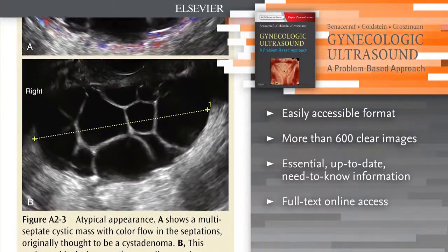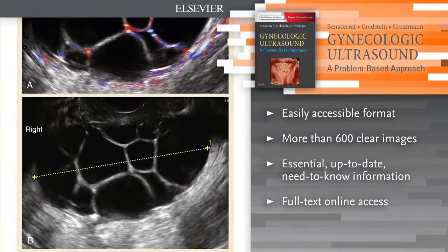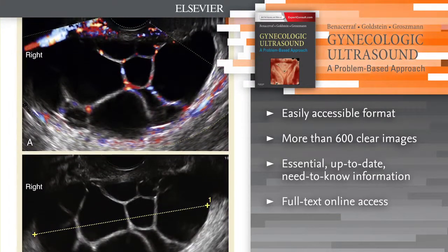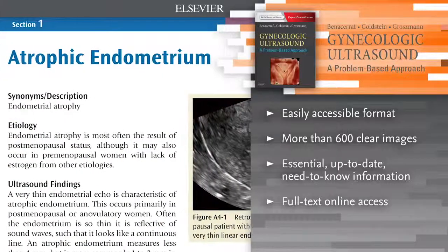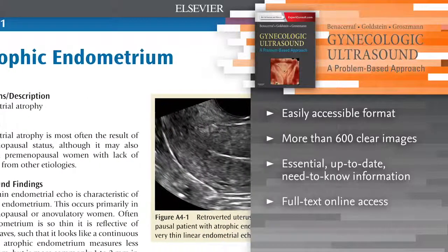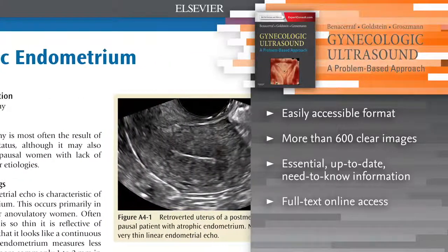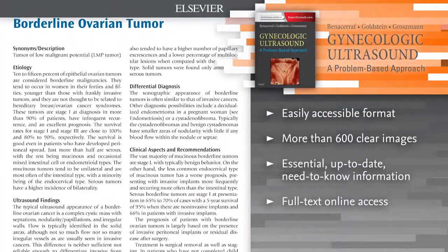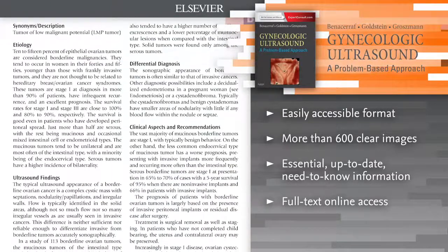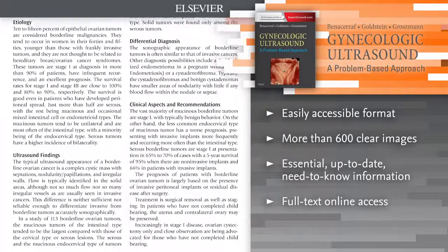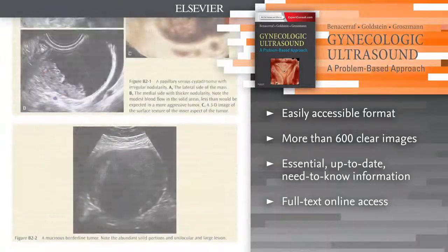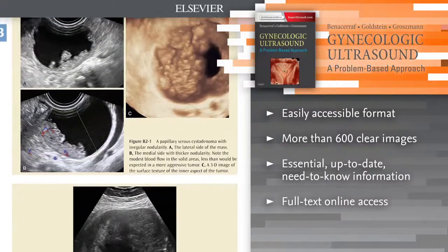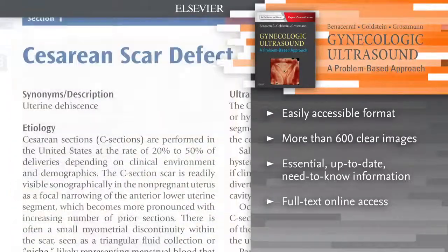Expedite and confirm diagnosis of gynecological abnormalities. An easily accessible format, organized by both entity and differential diagnosis, facilitates searches and zeroing in on the one correct entity. Master the nuances of using ultrasound through the visual instruction of more than 600 clear images, including 3D and Doppler, important and necessary tools for pelvic ultrasound.